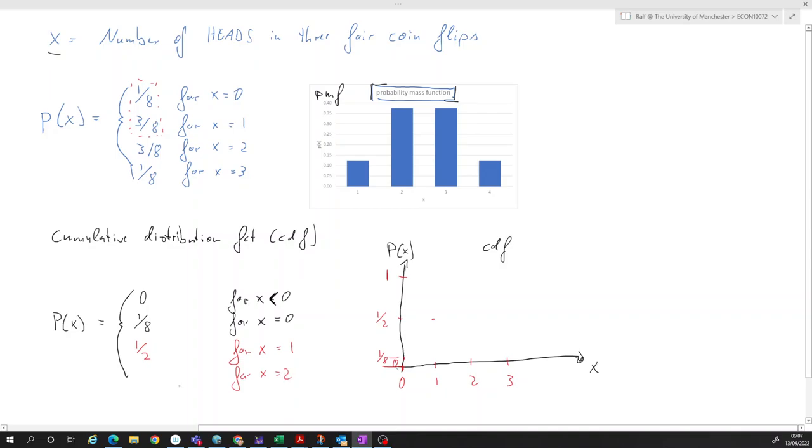And then for x equals two, that probability was the sum of these three, that was seven-eighths. And then for x equals three, that was just one, because it was the sum of all of these probabilities. So at two we're having seven-eighths, which is about here. Okay, so this is about seven-eighths. And then at three it is one.